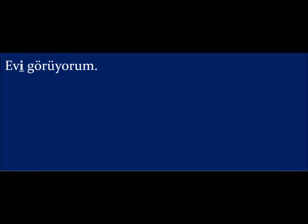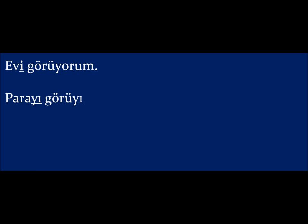But if we look at a word that ends in a vowel, like 'para' — which means money — if I say 'I see the money,' I'm going to have to say 'parayı görüyorum.' So if a word ends in a vowel and is in neutral form, the form you see in a dictionary, then you just add the letter Y to avoid two vowels coming together.